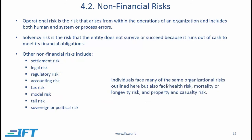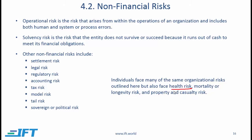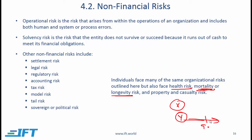Individuals may face many of the same organizational risks, but also face health risk, mortality or longevity risk, and property and casualty risk. Health risk refers to unexpected poor health, causing medical expenses to rise and income to fall. Mortality risk is where a person dies and their family no longer benefits from their income. Longevity risk is where a person lives longer than expected — for instance, retirement savings sufficient until age 90 run out if the person lives beyond that. Property and casualty risk is the risk of property value declining.